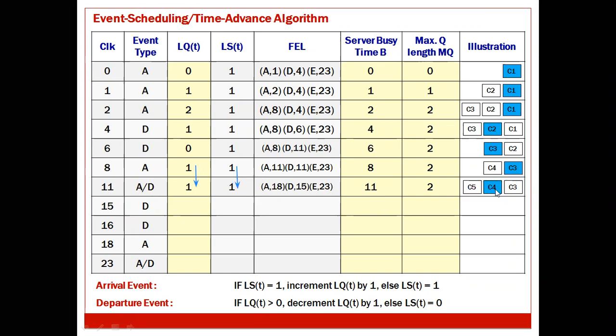At clock 15, event type is departure (D). LQ > 0, so decrement: LQ becomes 0, LS remains 1. Server busy time: between 11 and 15 the server was busy, so 11 + (15−11) = 15. Maximum queue length is still 2. Illustration: C4 has departed, C5 is taking service, nobody is in the queue.